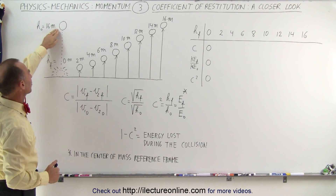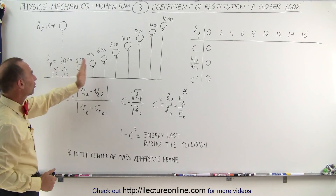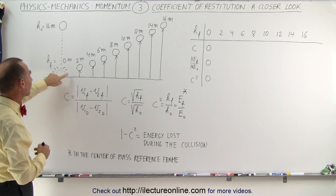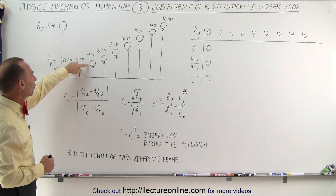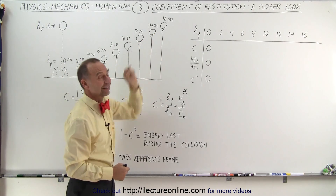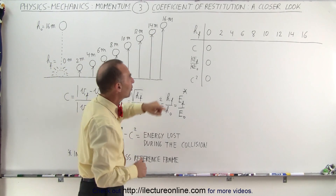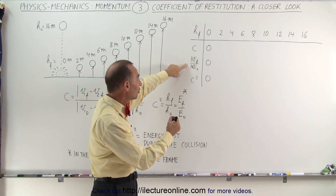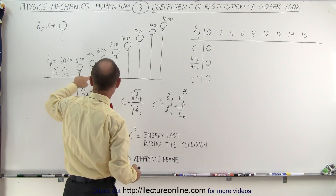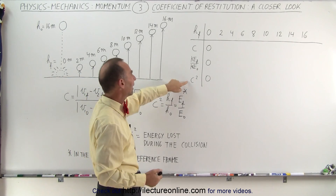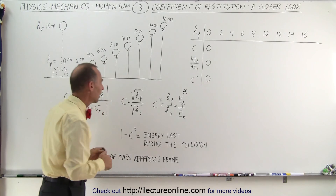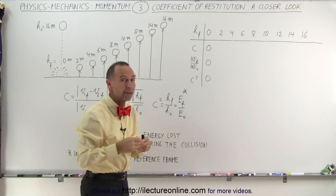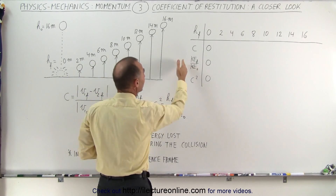Let's say we're dropping a ball from an initial height of 16 meters, and then in various situations: in the first case the ball does not return back in the air — it stays right on the ground — then it bounces back 2 meters, 4 meters, 6 meters, all the way up to 16 meters. We're going to calculate the coefficient of restitution, the ratio of the final kinetic energy to the initial kinetic energy before and after the collision, and the coefficient of restitution squared. The ratio of final to initial energy is proportional to the ratio of the final to initial height.